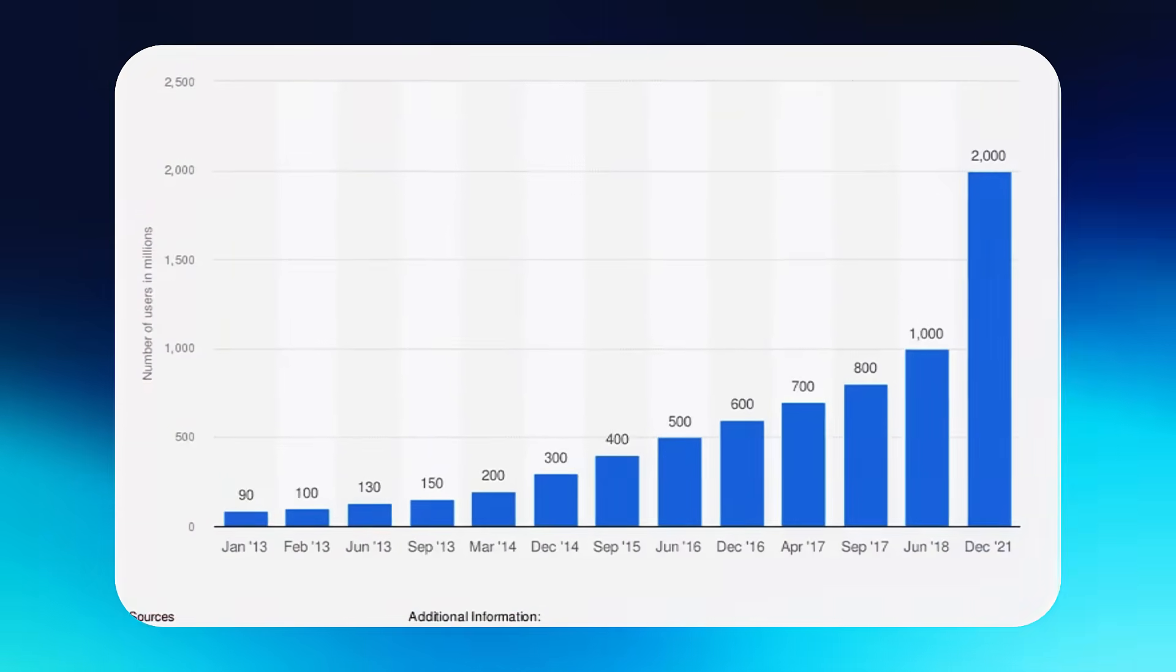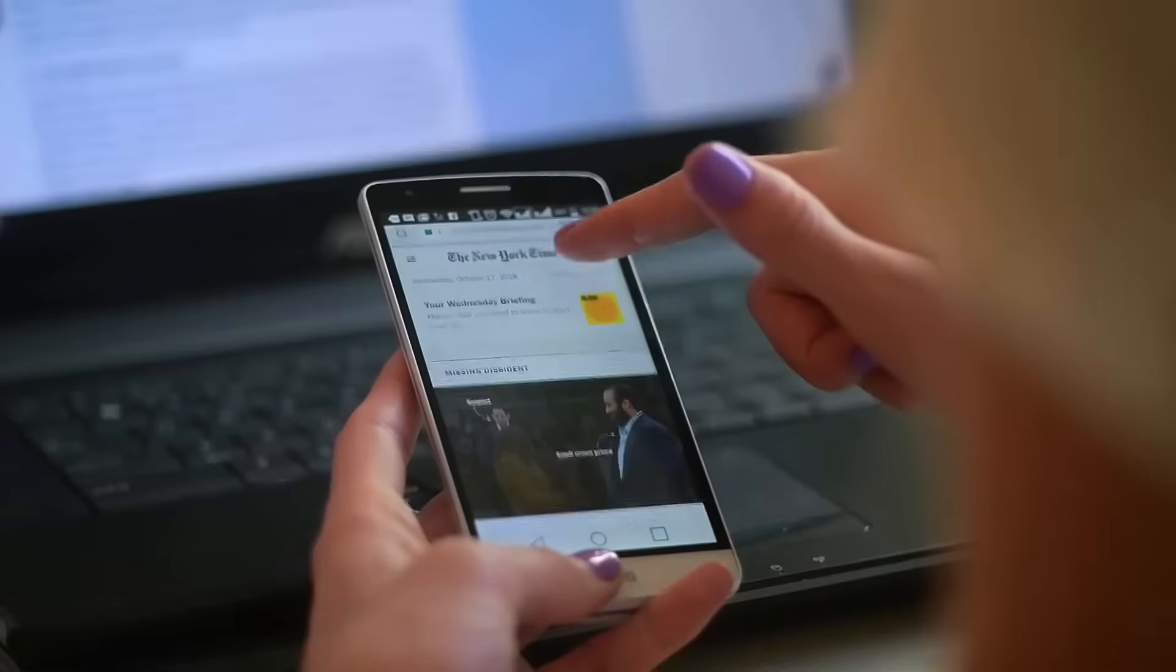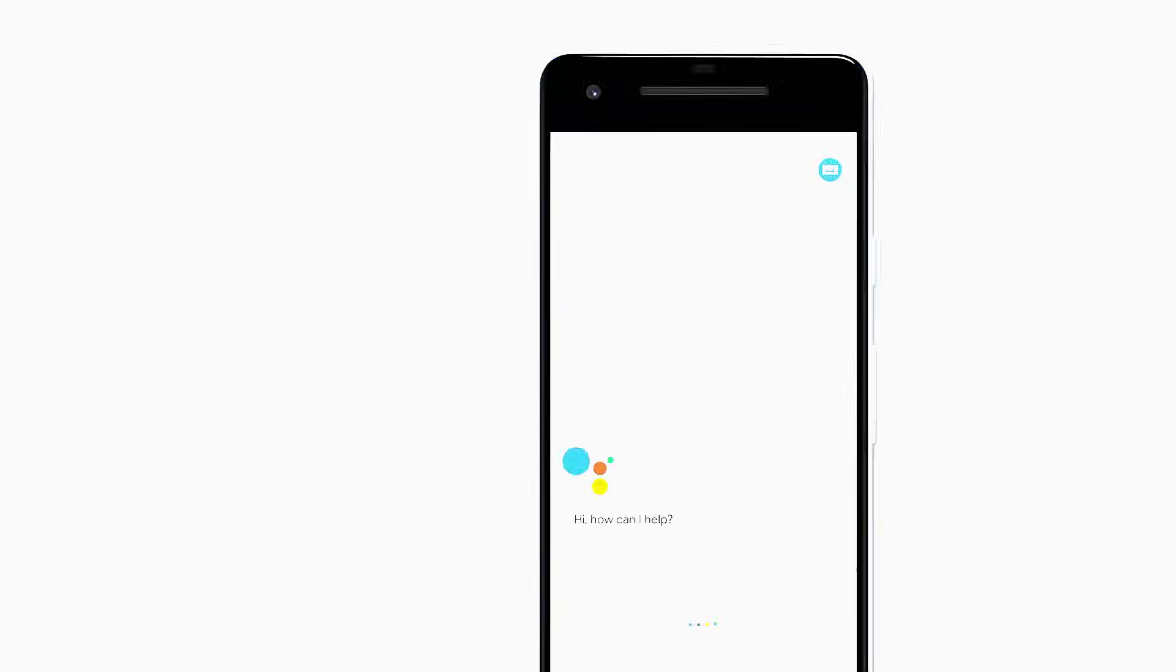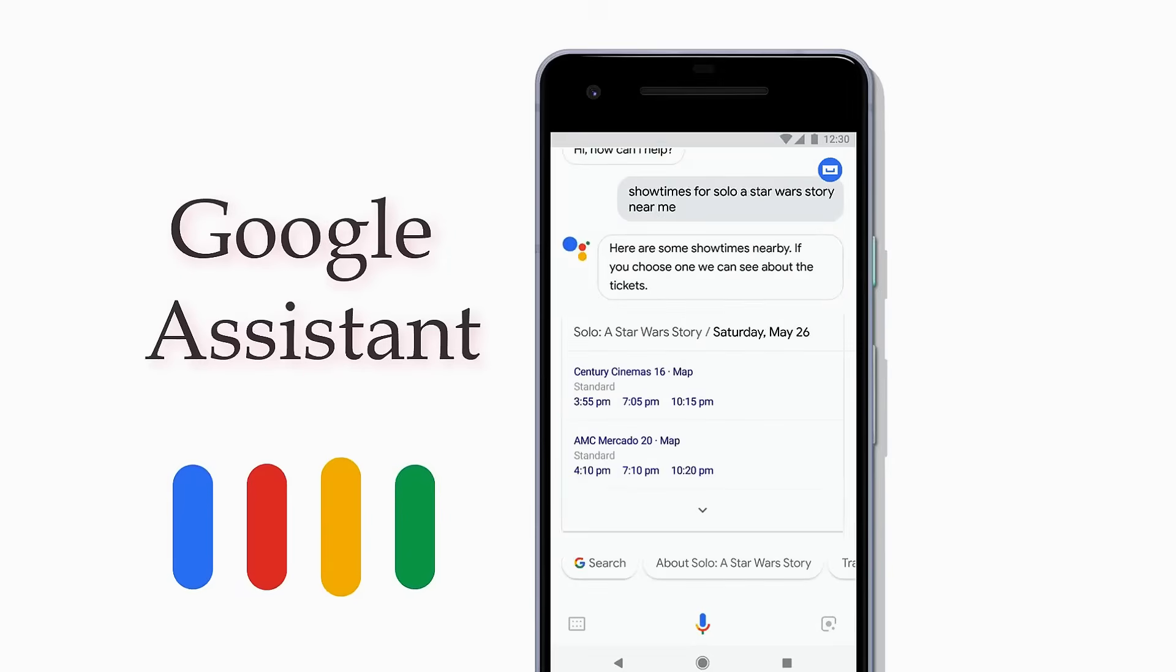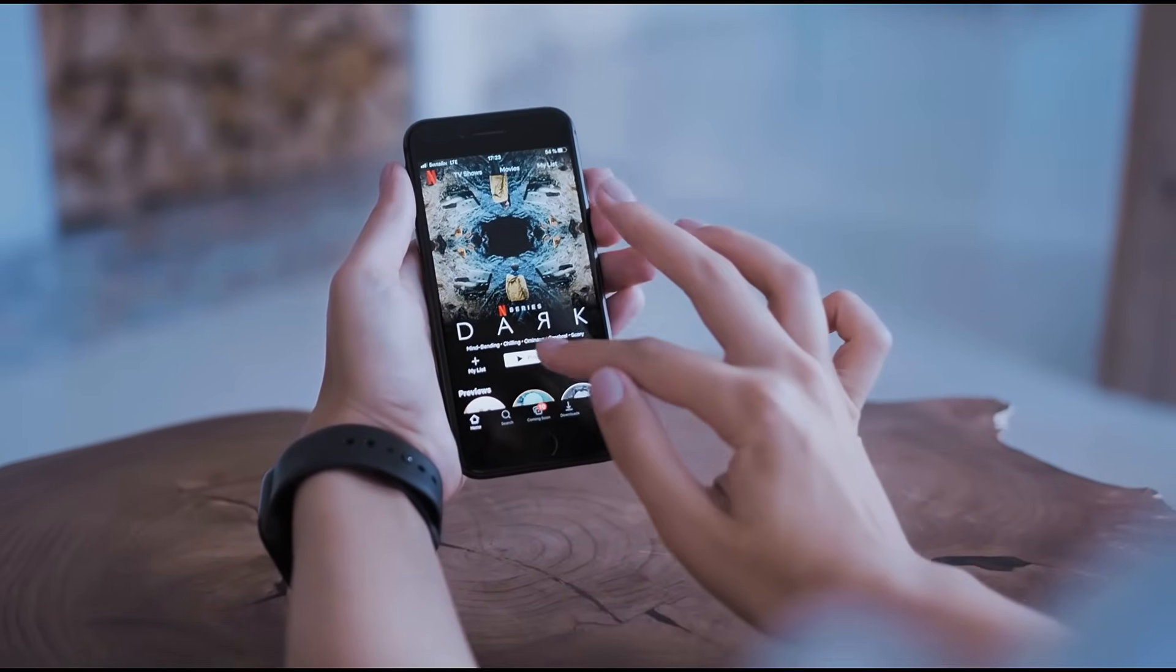By 2024, over 4 billion people were using AI-powered devices daily, according to Statista. This omnipresence is creating a world where AI knows you better than you know yourself, predicting your desires with eerie precision. A 2022 Cambridge study revealed that AI could infer personality traits from social media activity with 90% accuracy, raising chilling questions about privacy and manipulation.